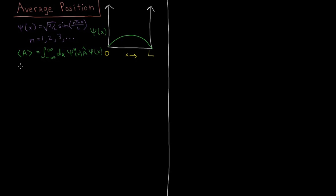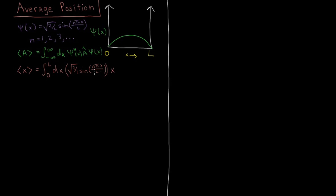For position, the average value of X is the integral from 0 to L — since the wave function is zero outside of 0 and L, we can just integrate over that range. We plug in the wave function: the solutions for a given N are the square root of 2 over L times sine of NπX over L. The operator for position is just multiplication by the variable X, so that's just a standard multiplication acting on the wave function.